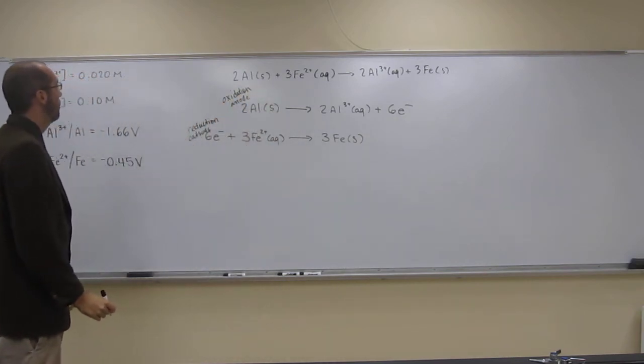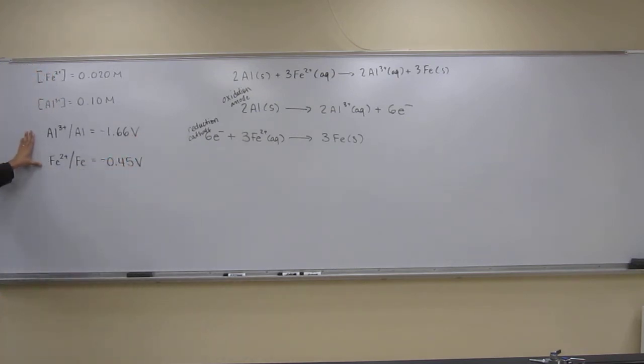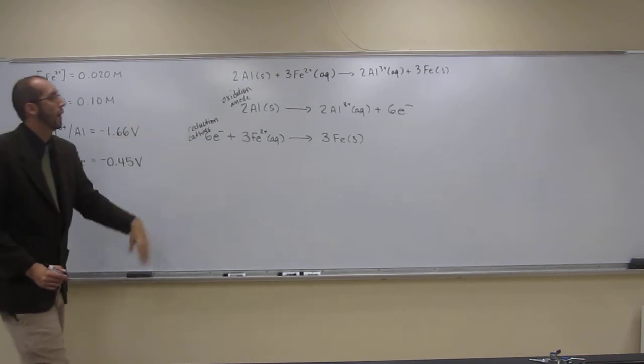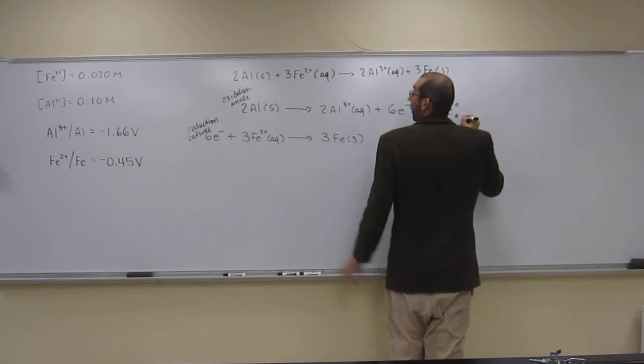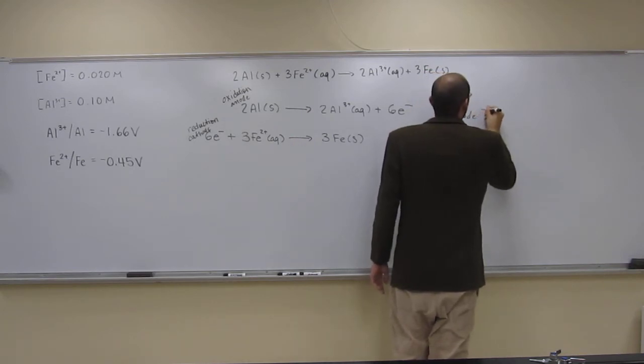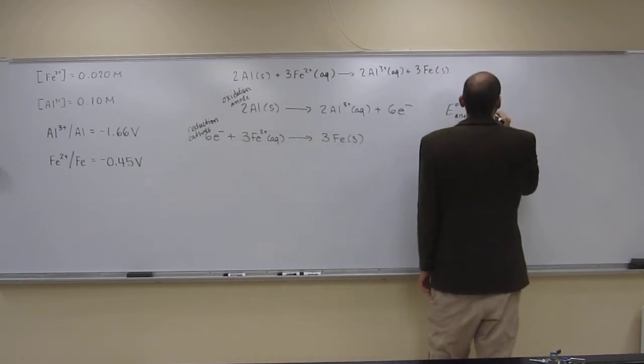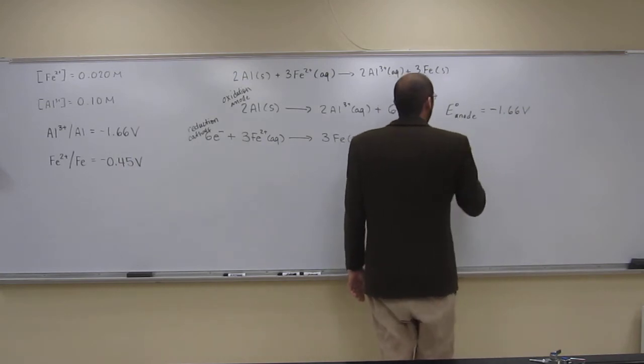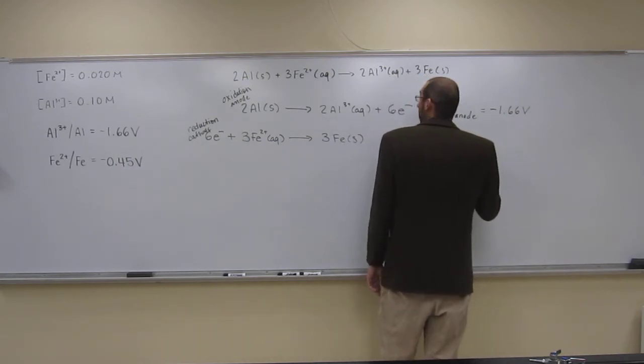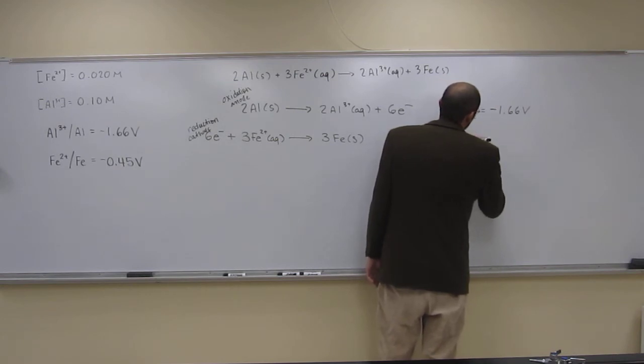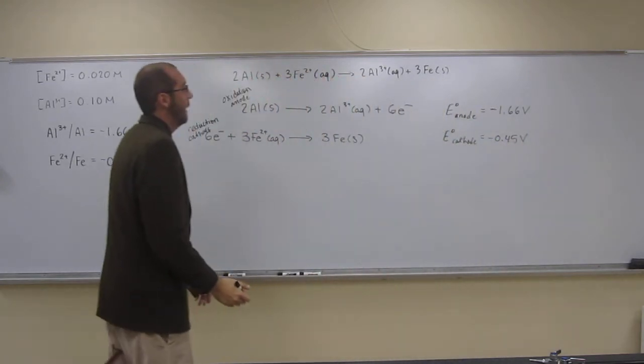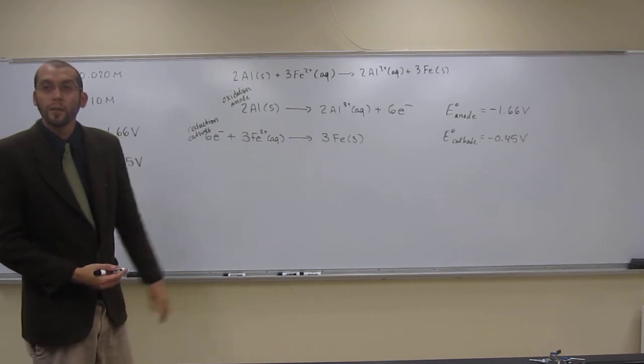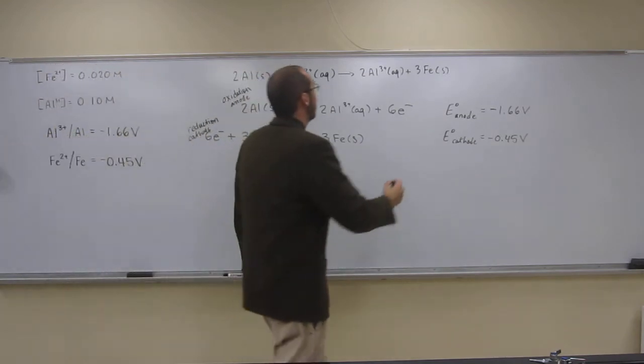So let's give these half reaction potentials to these two reactions now. We've got the standard potential of the anode—that's going to be the Al one, so negative 1.66 volts there. And the standard potential of the cathode is going to be negative 0.45 volts. So why is that important? Because now we can figure out what the standard cell potential is.